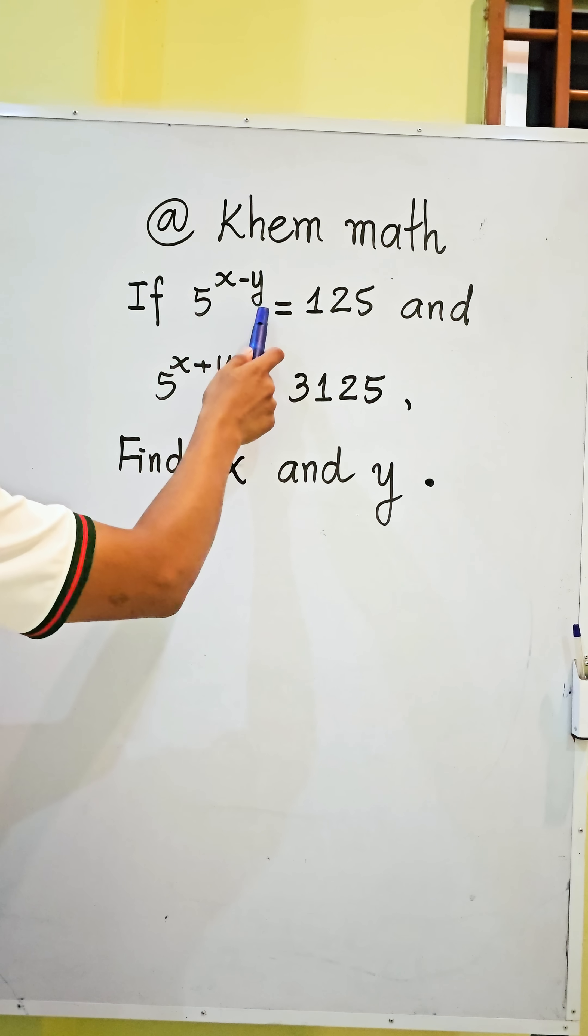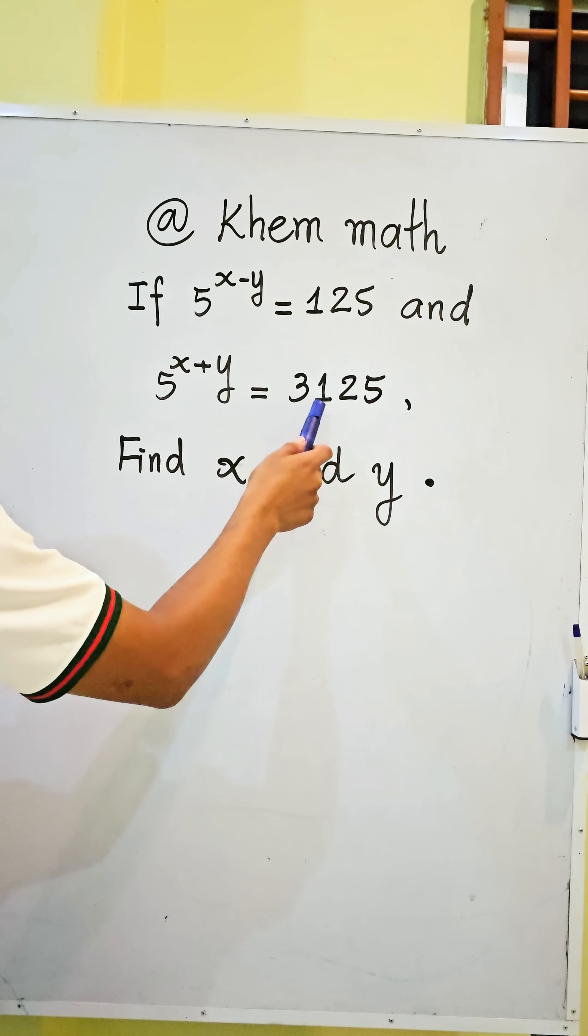If 5 power x minus y equals 125 and 5 power x plus y equals 3125, find the value of x and y.